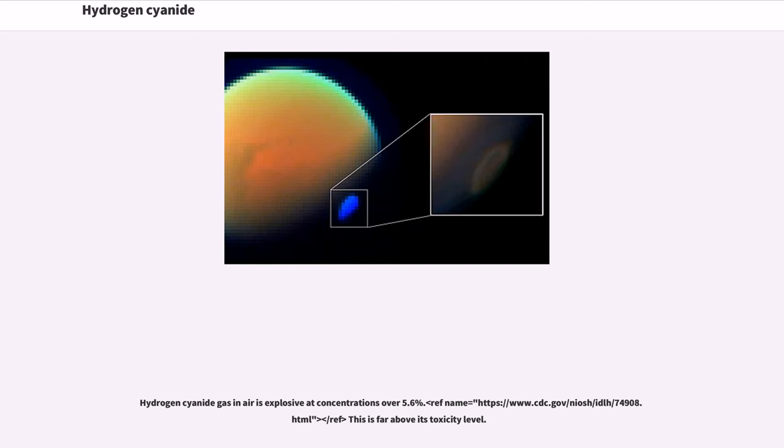Hydrogen cyanide gas in air is explosive at concentrations over 5.6 percent. This is far above its toxicity level.